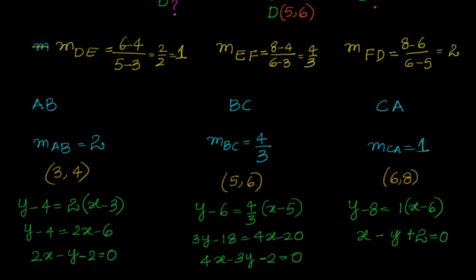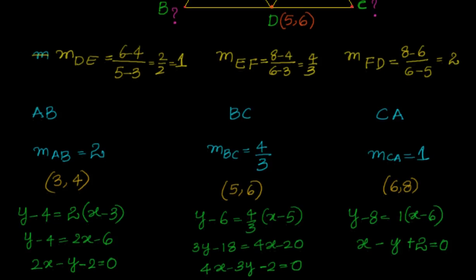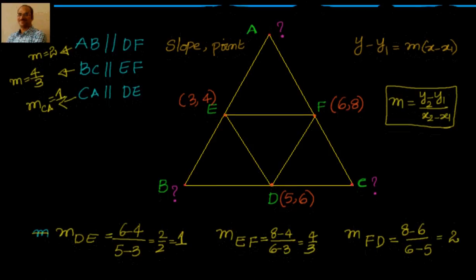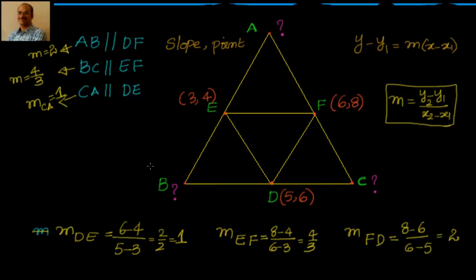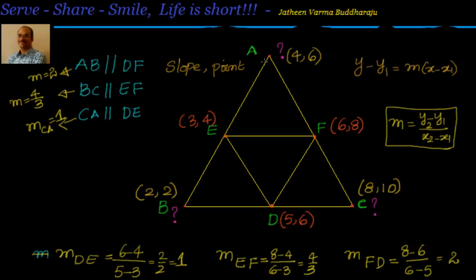Now, if you solve AB and BC simultaneously, you get coordinates of B. Solving BC and CA gives coordinates of C. Solving AB and CA gives coordinates of A. You can solve them by substitution or elimination. The coordinates are: B = (2, 2), C = (8, 10), and A = (4, 6). Check it out and let me know if you are not getting them.